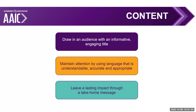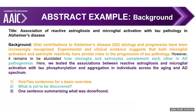Your abstract must also maintain attention by using language that is appropriate and understandable to those reviewing it, and ultimately leave a lasting impact through a take-home message crafted from what you've found. For example, a good title speaks directly to what the abstract will cover with snappy keywords. The background should be broken into a basic overview delivered in one or two sentences, followed by what is yet to be discovered, and then a final sentence telling reviewers what was done and what was found — holding their attention to earn a good score.